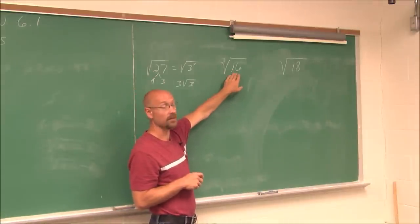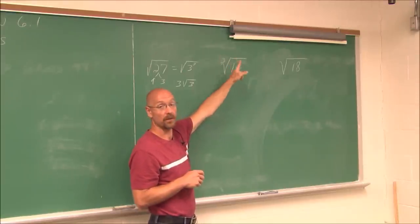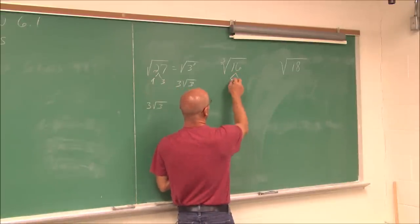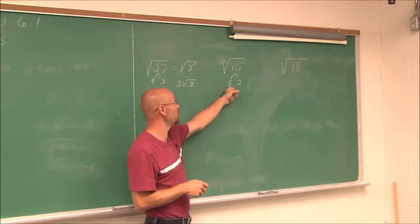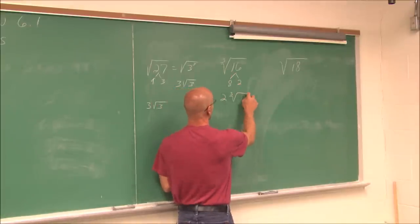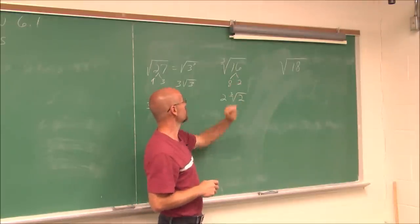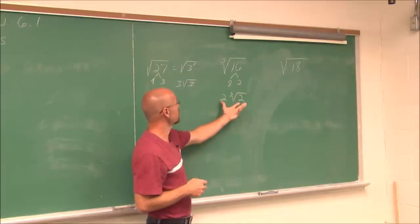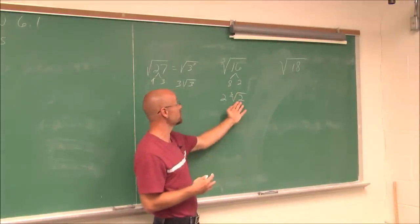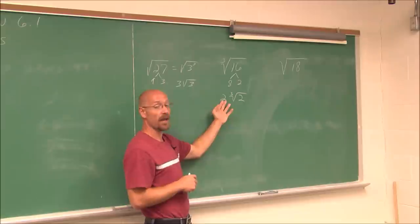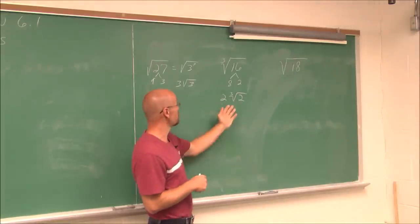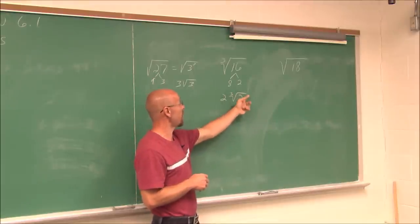Here we have the cube root of 16. 16 is 8 times 2 — I recognize 8 as a perfect cube, so the cube root of 8 is 2. The cube root of 2 cannot be simplified further. So the cube root of 16 is 2 times the cube root of 2. We simplify radicals this way because working with a minimized radical is more useful for estimation and further mathematical operations.